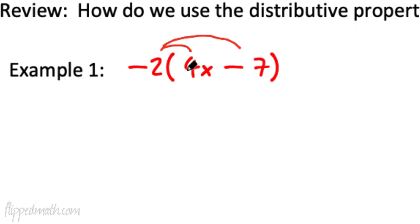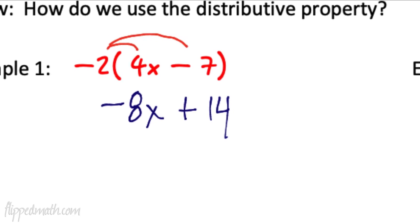So negative 2 times 4x. We know that that is equal to negative 8x. And you got to be careful with these negatives. Negative 2 times negative 7. That's a positive 14. So I'm going to write down plus 14. Does that jar your memory a little bit?